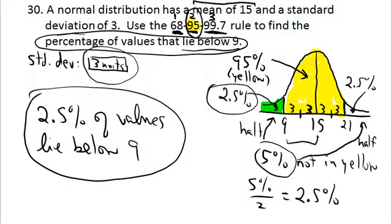The question asked for the percentage of values that lie below 9, and from the graph you can see the answer is 2.5%. So 2.5% of values lie below 9. Step by step: draw a sketch, put the mean on it, use your standard deviation as a measuring stick, count how many measuring sticks fit between the mean and the value you're looking for, and take it from there.